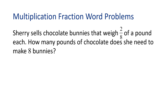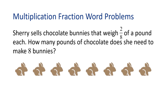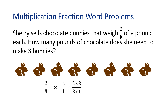What if Sherry sells chocolate bunnies that weigh two-eighths of a pound each? How many pounds of chocolate does she need to make eight bunnies? This time, we will multiply two-eighths times eight. Let's start by writing eight as a fraction, eight over one. Now we can multiply straight across. This gives us two times eight in the numerator and eight times one in the denominator. Two times eight is sixteen, and eight times one is eight, so we have sixteen-eighths. Sixteen divided by eight is two, so we can simplify the fraction and we get a whole number. This means Sherry's eight bunnies will weigh two pounds. That sounds like a lot of yummy chocolate.